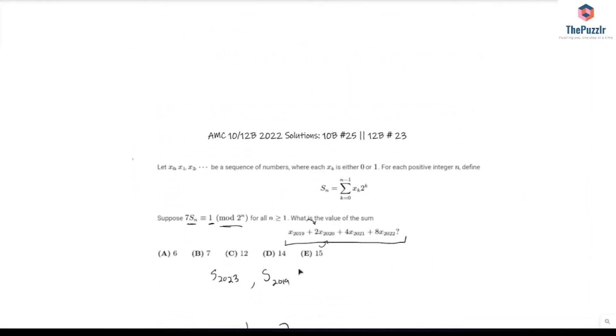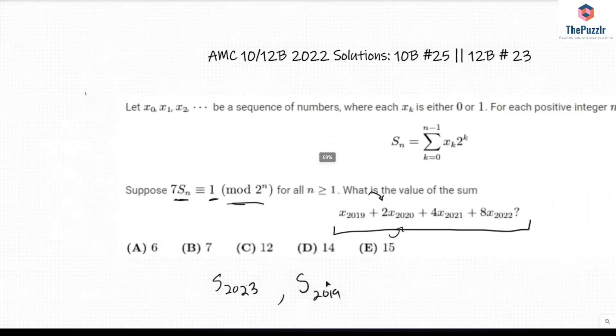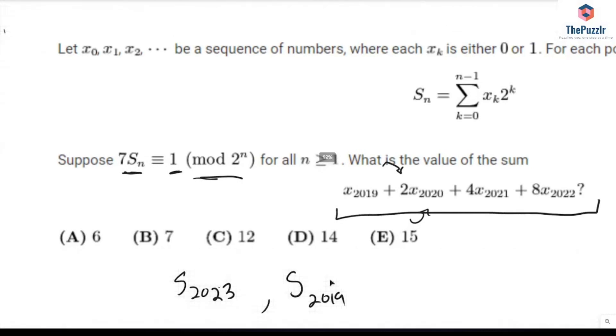But looking back at the answer choices, 9, 11, or 13 are not answer choices. So the only solution that we have available to us is A, so that must be our answer. And with that, we're done with the problem.